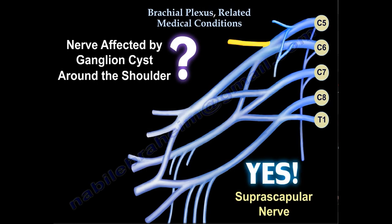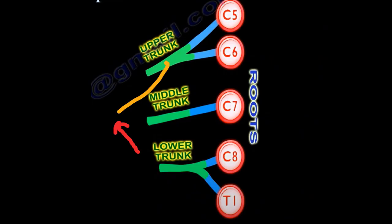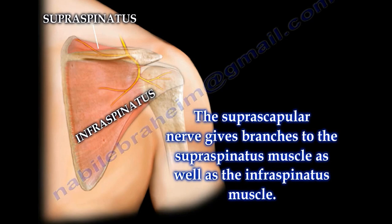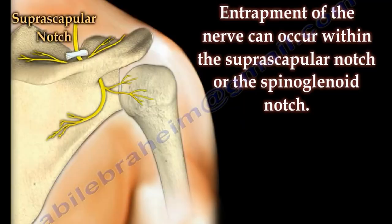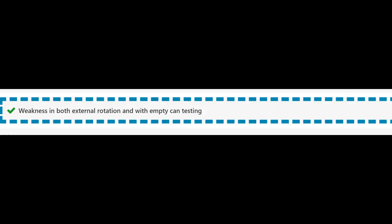Which nerve is affected by a ganglion cyst around the shoulder? It is the suprascapular nerve — the only nerve that comes from the upper trunk. The suprascapular nerve gives branches to the supraspinatus and infraspinatus muscles. When you compress the nerve at the suprascapular notch, you affect branches to both muscles. If you compress it at the spinoglenoid notch, you affect only the infraspinatus. Compression at the suprascapular notch causes weakness in external rotation and with empty can testing.